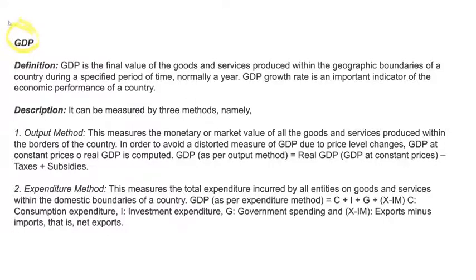First of all, GDP. GDP is the final value of goods and services produced within the geographical boundaries of a country during a specific period of time, normally a financial year. GDP is the final money value of goods and services produced in the geographical territory of a country during a specific period of time. GDP growth rate is a very important indicator of economic performance.